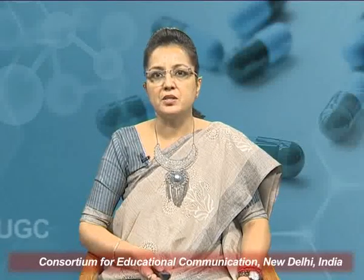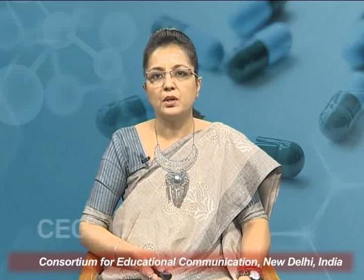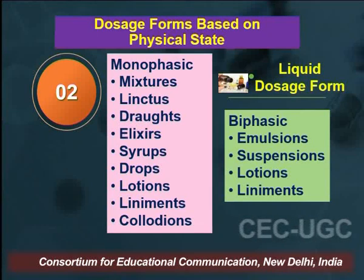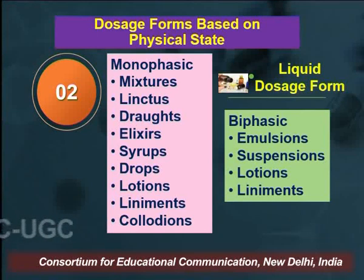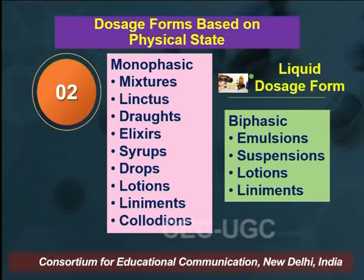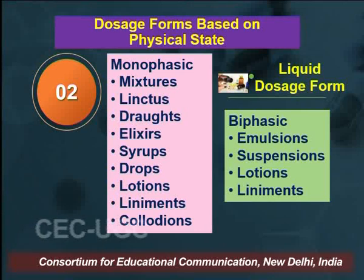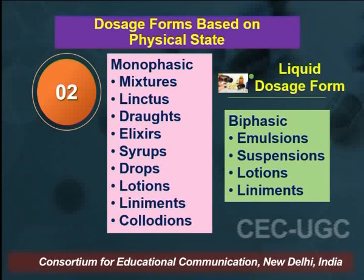The second category under physical state is liquid dosage forms, which can be either monophasic or biphasic. Under monophasic, we have mixtures, linctuses, draughts, elixirs, syrups, drops, lotions, liniments, and collodions. Under biphasic, it includes emulsions, suspensions, lotions, and liniments.